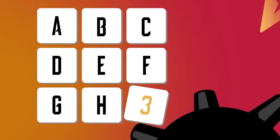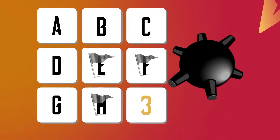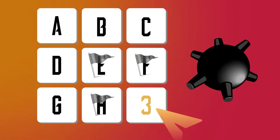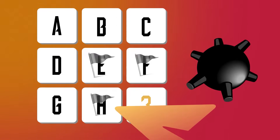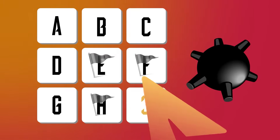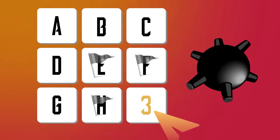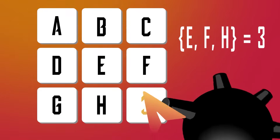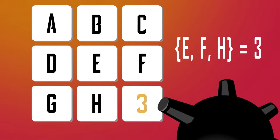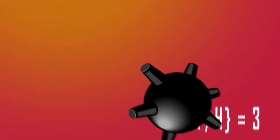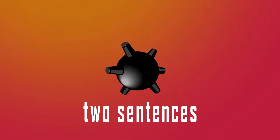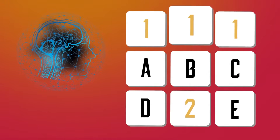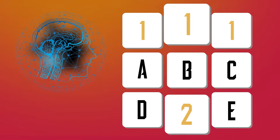We have something similar in this board, but now instead of no mines, we know that E, F, and H are mines because 3 is the number of neighbors that the cell has. In this case we would represent it as E, F, H = 3.